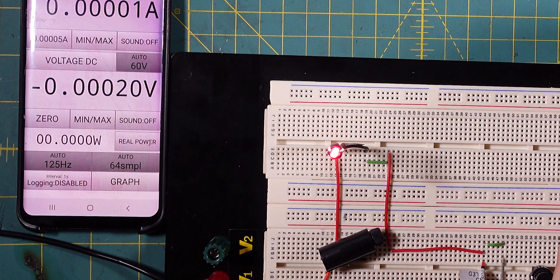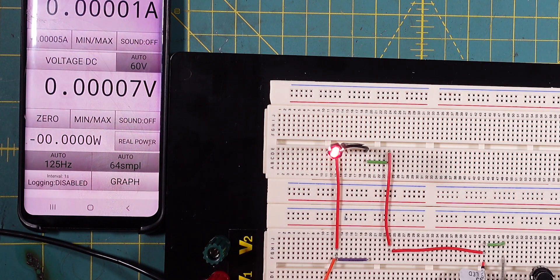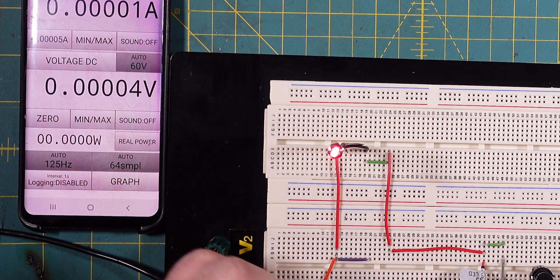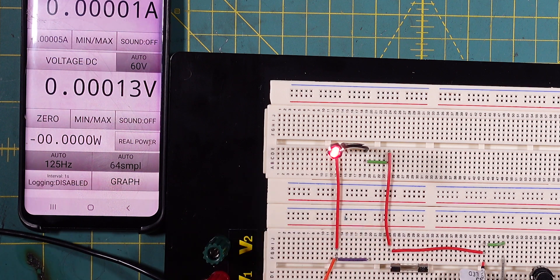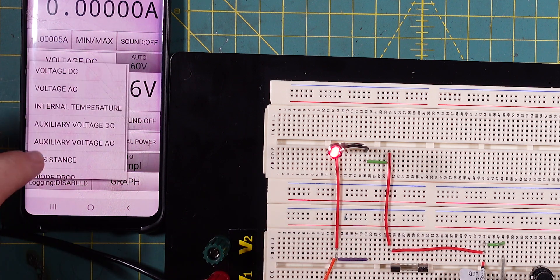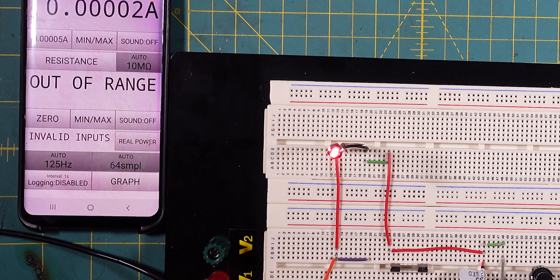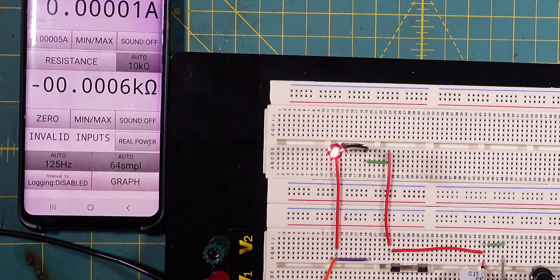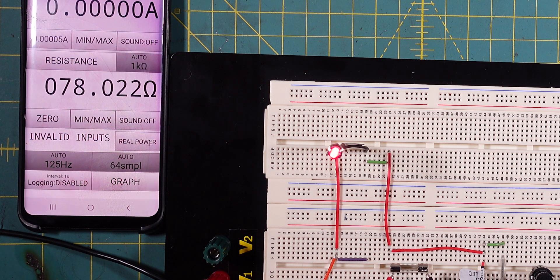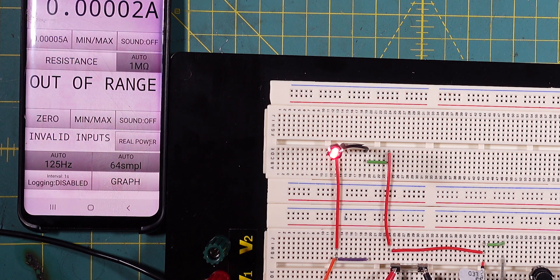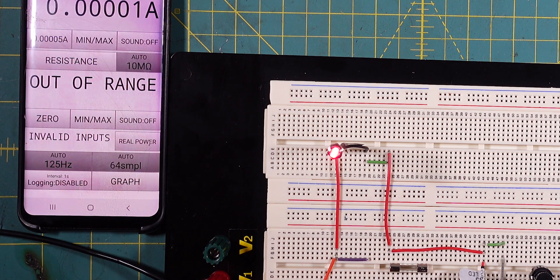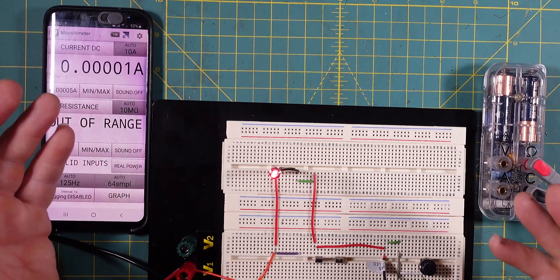and I'll put it on to ohms. So we can check whether the fuse is actually blown. Now I'll move this over to resistance and if I touch the probes together there we go. We've got essentially no resistance there. But if I put it either side of the fuse there we go. We're out of range. So the fuse is blown. So the circuit actually works.